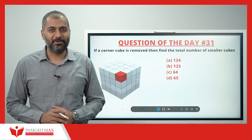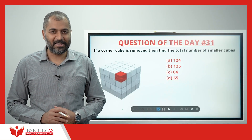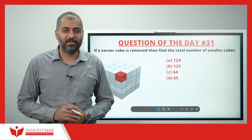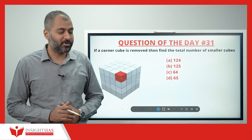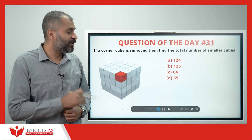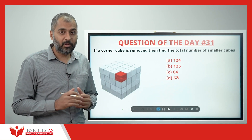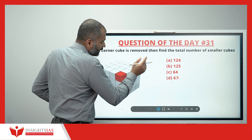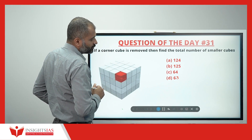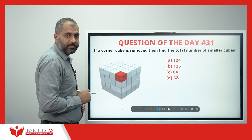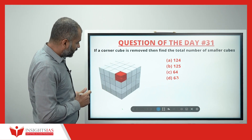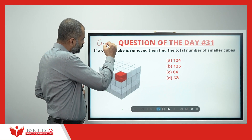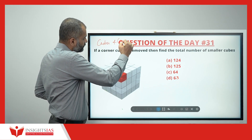Hello everyone. I am Shamant Ghoda, CSAT faculty at Insights. I welcome you once again for the CSAT series question of the day 31. The question is: if a corner cube is removed, find the total number of smaller cubes. The topic here is cubes and cuboids.